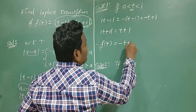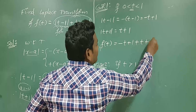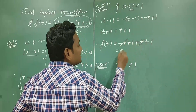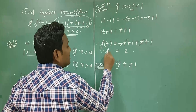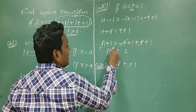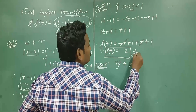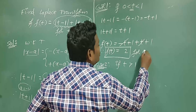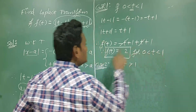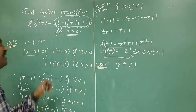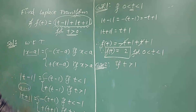So f(t) is the summation of both parts: minus t plus 1 plus t plus 1. The minus t and plus t cancel. 1 plus 1 is 2. So finally, f(t) equals 2 for 0 less than t less than 1. In this range the entire function becomes 2.